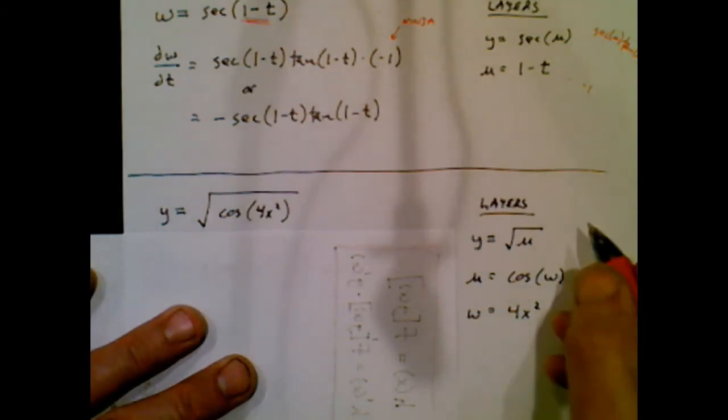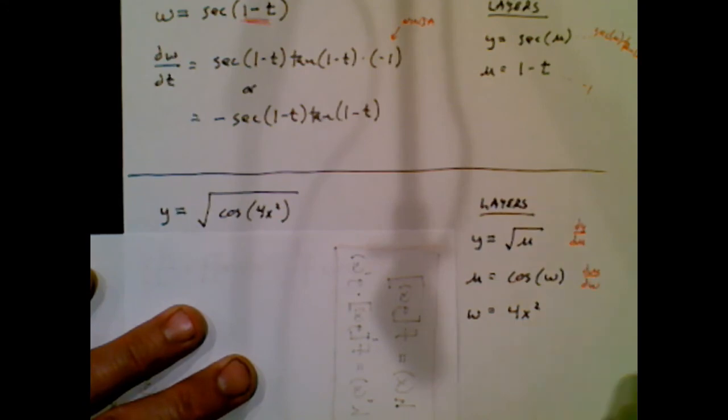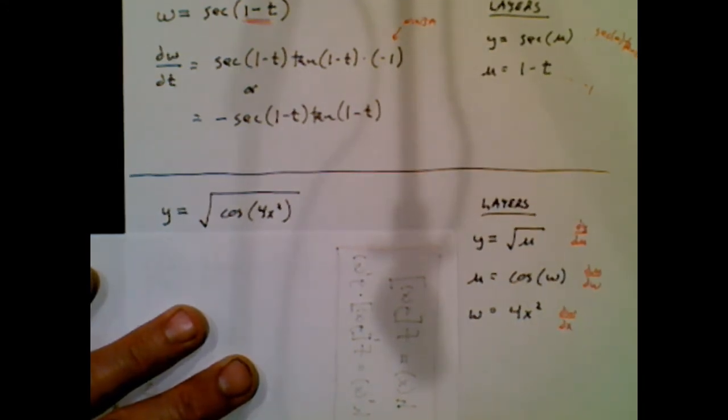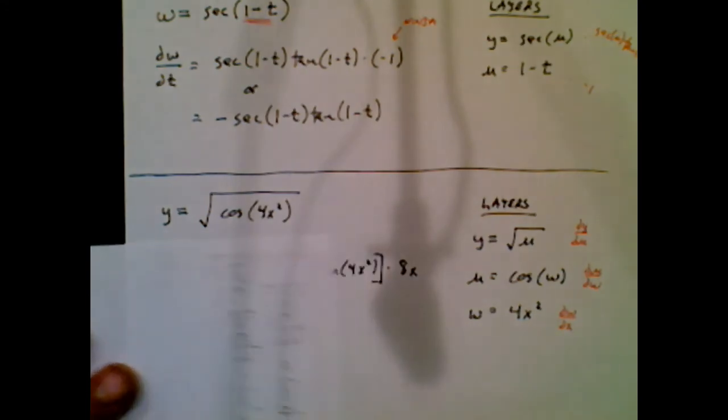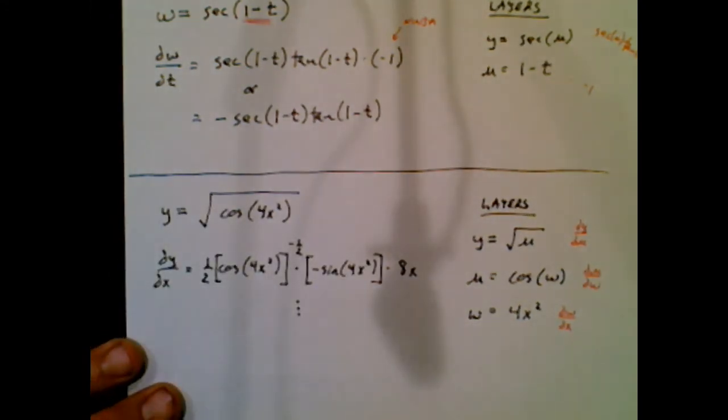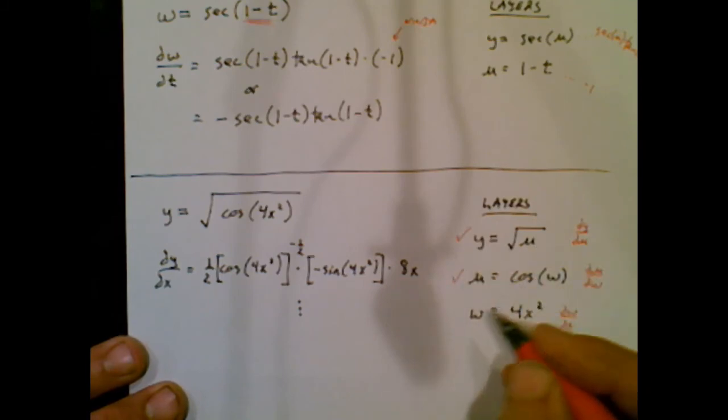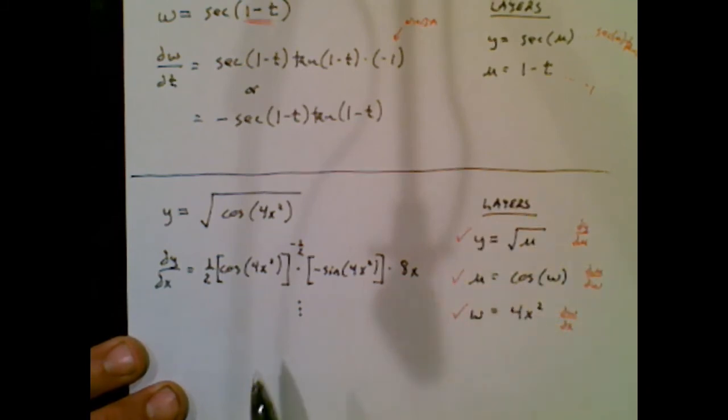If I took the time to do Leibniz symbolism, that derivative would be a dy/du, then a du/dw, and a dw/dx. All right. Well, now if I go ahead and take the derivative, I can kind of mentally say derivative of the outer layer, the middle layer, and the inner layer. The outer layer is a square root function. So, by the way, I could think of that as u to the one-half. The derivative is one-half u to the negative one-half.